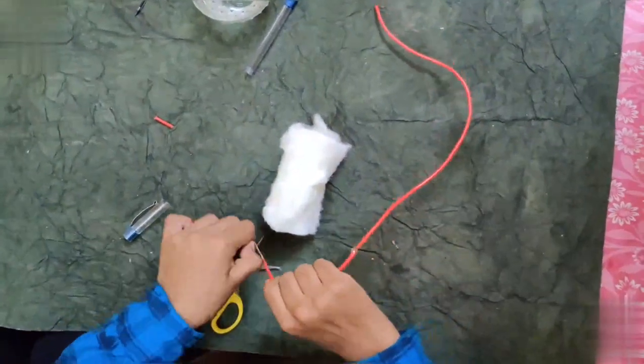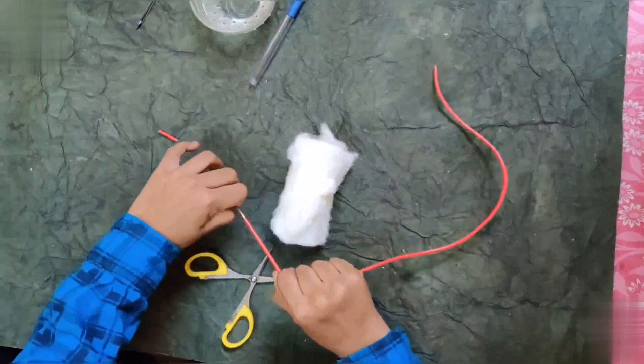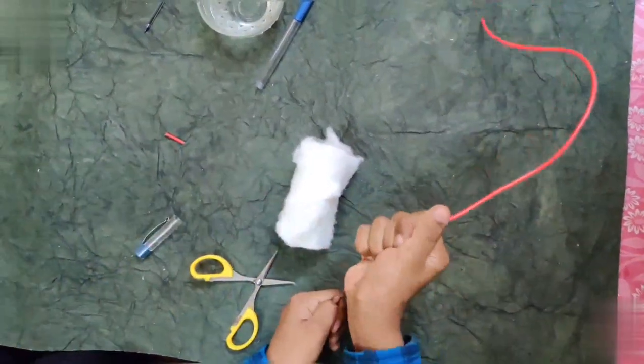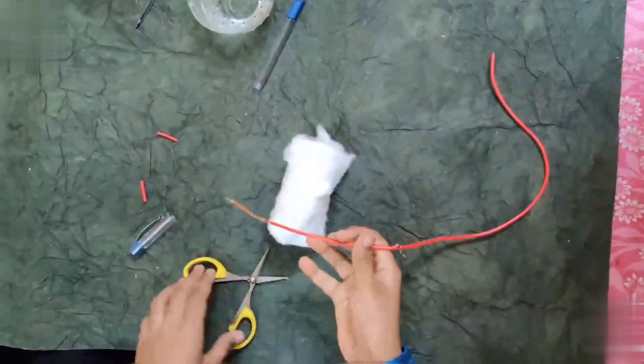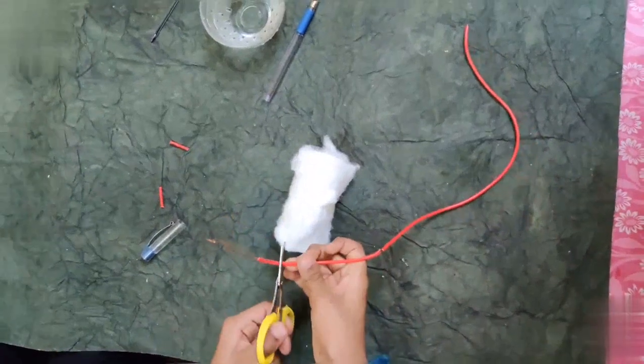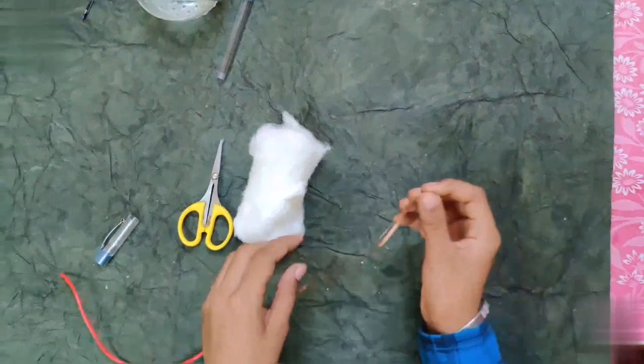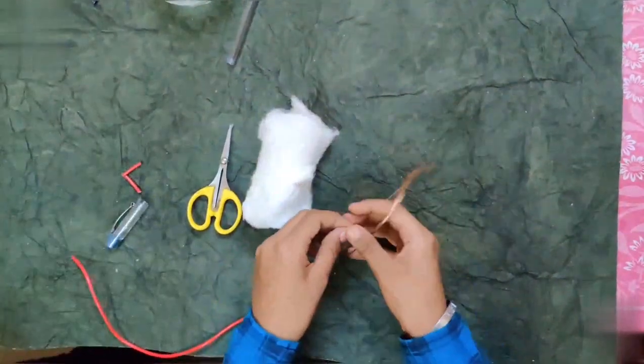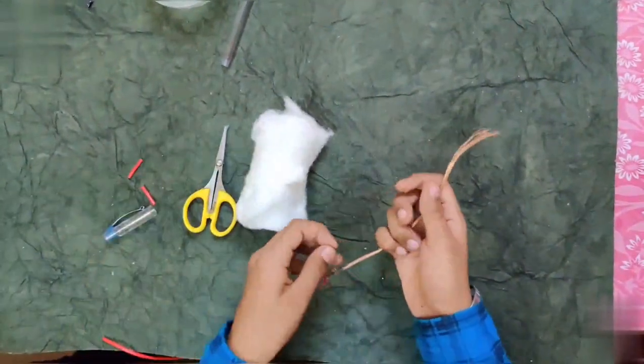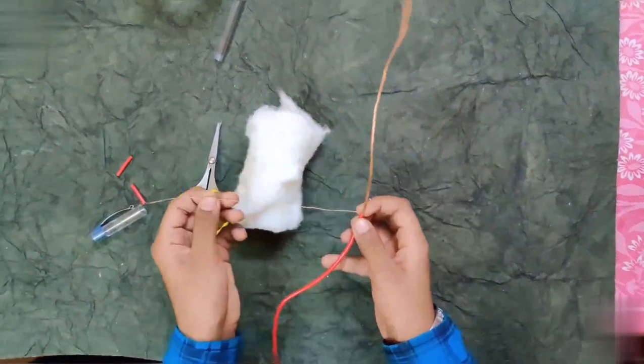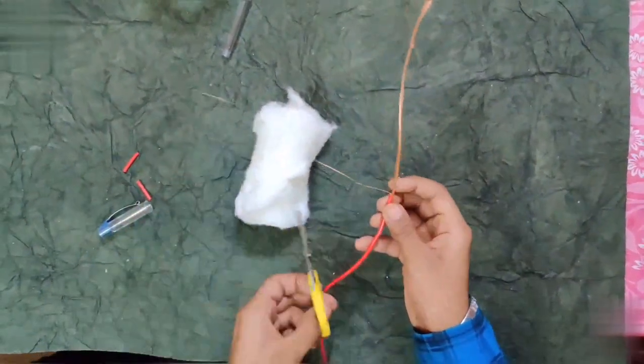For this, we need only one strand. See, now we have taken the electric cover. These are the pieces. Then, we should take this one. We need only one strand. So, take that one strand and cut it again.